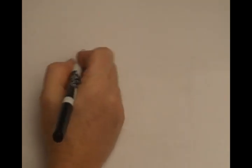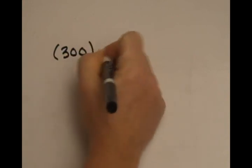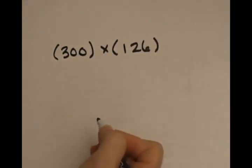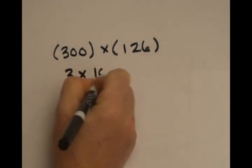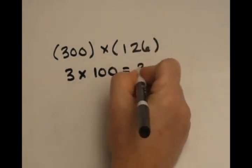Let me show you how to multiply from left to right. Suppose I have a number, 300, and I want to multiply it by 126. So the first thing I would do is I'd multiply 3 times 100, so the 100 is from this number, and I'd get 300.